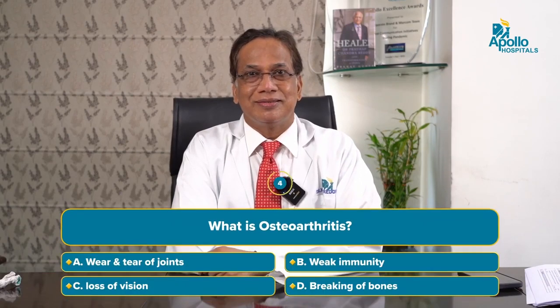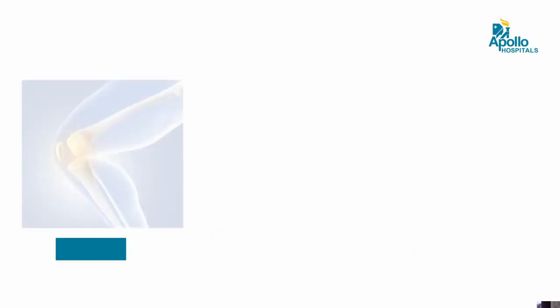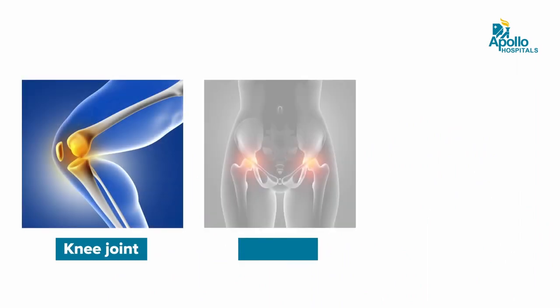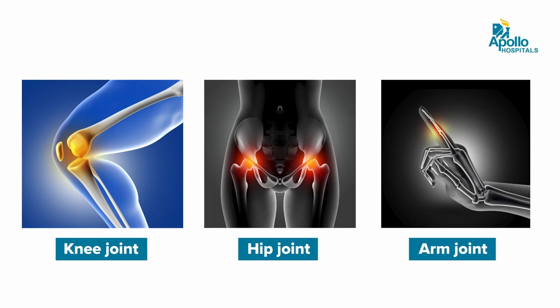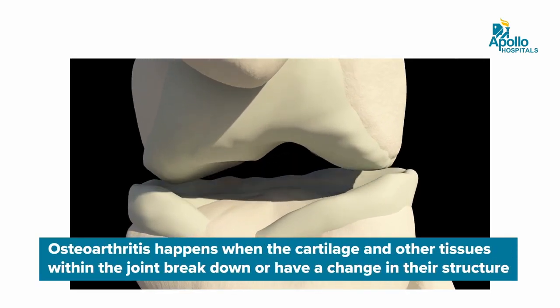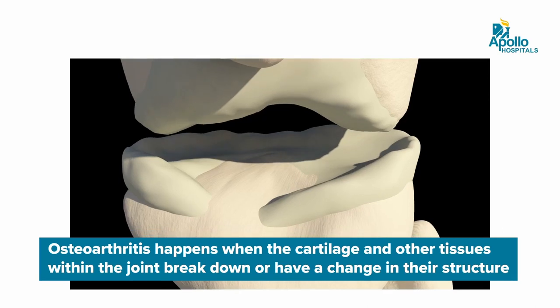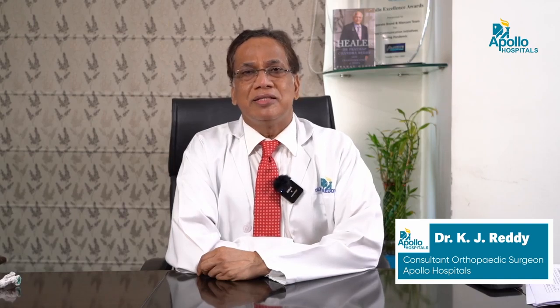What is osteoarthritis? Osteoarthritis is nothing but wear and tear of a joint, and it mainly affects major joints like the knee joint, hip joint, and joints of the arm. Basically, what happens is the end of the bone forms the joint. It is covered by cartilage. The cartilage gets wear and tear and it doesn't get repaired, so the bone under the cartilage gets exposed, which becomes painful.